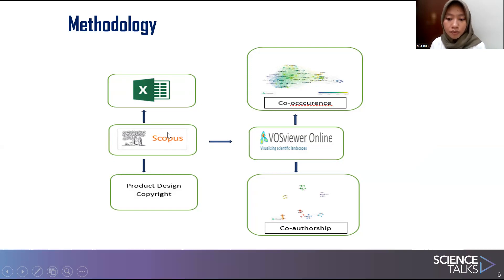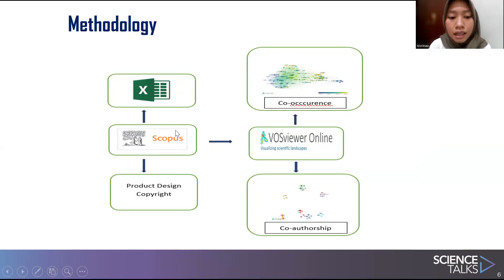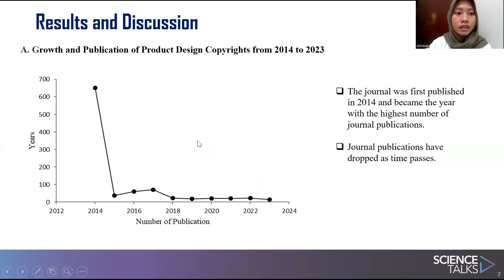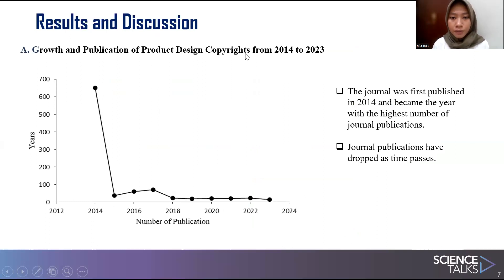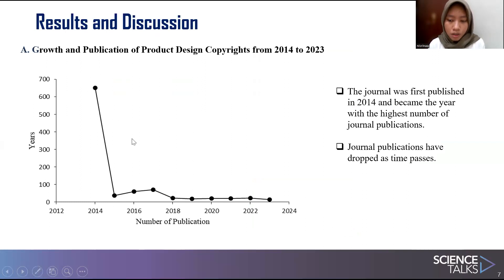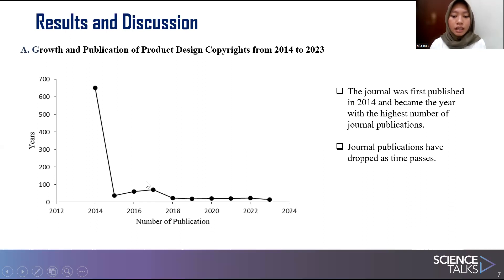These values come from journal searches in the form of Scopus or ScienceDirect. The map from VOSviewer consists of network items in the form of author, years of publications, country, and others. Looking at the publication data from 2014 to 2015, the journal was first published in 2014, which became the year with the highest number of journal publications, after which there was a very significant decline.